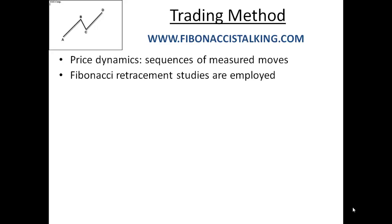Three different types of movements are identified. The first type is traditional measured moves, the second type is extension measured moves, and the third type is straight up or down moves, the latter being very strong and precise directional movements, often based on extreme emotions. For each movement, the method clearly establishes entry areas, stop-loss price, and a few target levels.